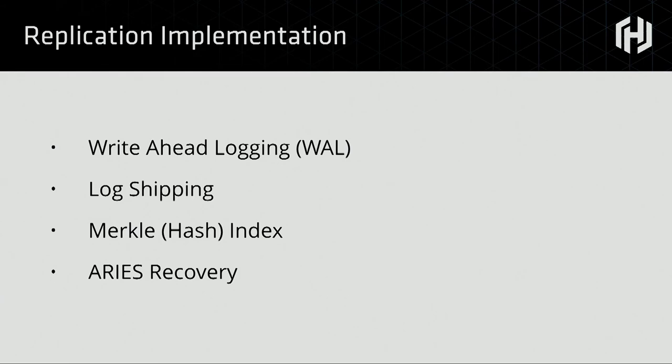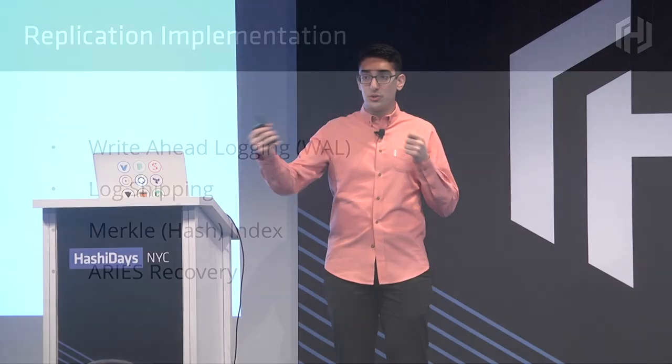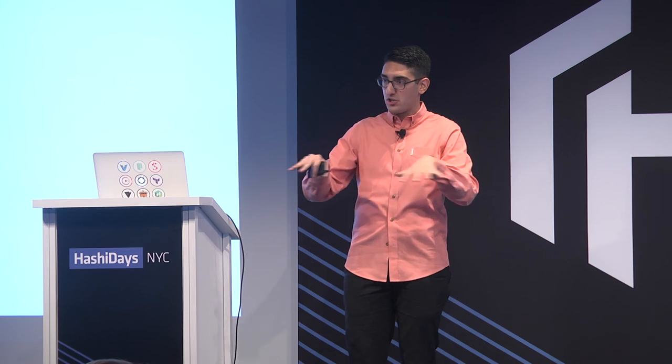You can think about it as a balanced binary tree where every node is a hash of the children nodes. As long as your two root hashes are the same, you know both trees are the same with very high confidence, especially using cryptographic quality hashes. When the two hashes diverge, you can walk the tree to figure out which branches have diverged and sync only subsets of the tree. If you have two million keys under management, you don't want to re-replicate all two million just because five of them are wrong — you'd rather replicate just those five.